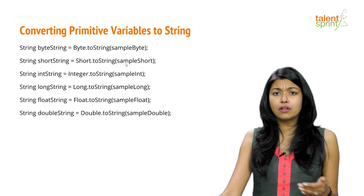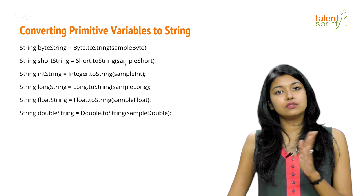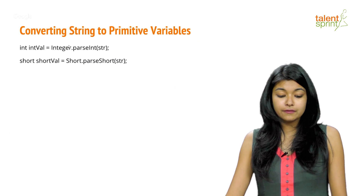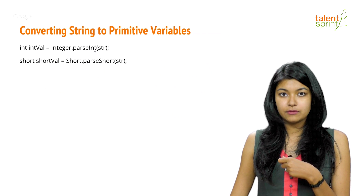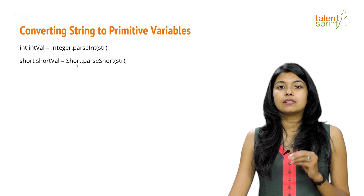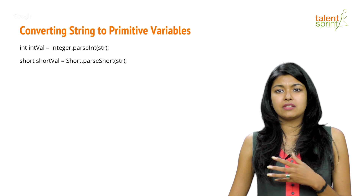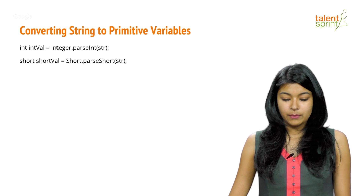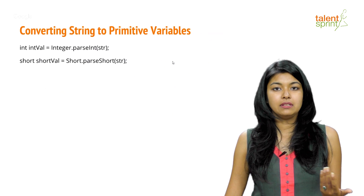Similarly you can convert integer, long, float, and double primitive values to a string. Likewise, strings can also be converted back to primitive values using the parse functions of the wrapper classes. For example, to extract an integer from a string, use 'Integer.parseInt()' — that will parse the integer value from the string. Note that a string doesn't have to be all characters; it can also have numbers or special characters like underscores or percentages. Similarly, short and all other primitive data types can be extracted from strings.